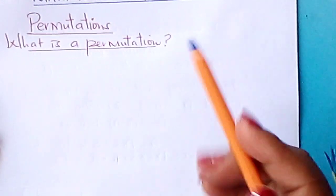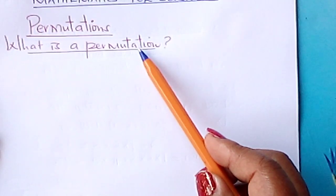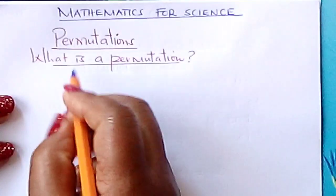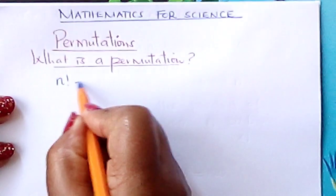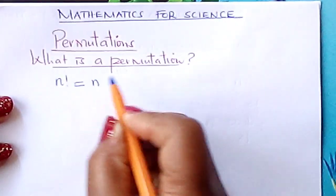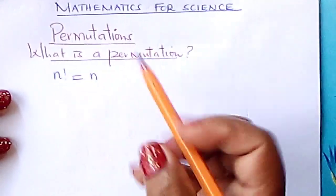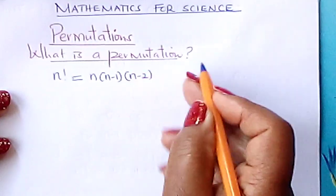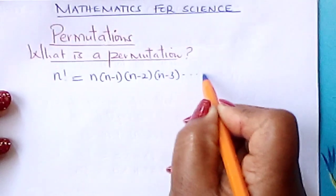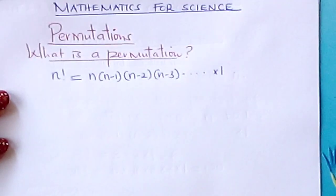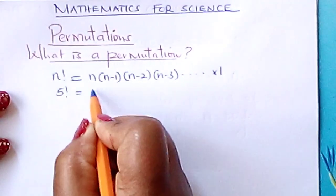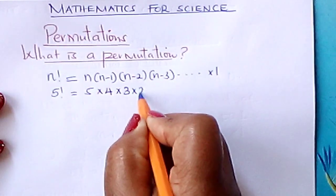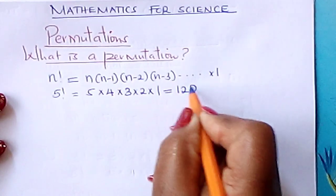In our previous lesson, we looked at factorial notation, the n factorial, and I hope we understood what it meant. Let me do a little review. If you have n factorial, we said that n factorial is the product of all the integers from n all the way to 1. So you talk of n, n minus 1, multiply by n minus 2, n minus 3, you go subtracting 1 as you go to the right, all the way to times 1. For example, 5 factorial is 5 times 4, you're just subtracting 1 as you go to the right, times 3, times 2, times 1, and this gives you 120.